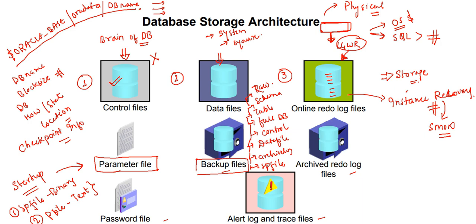Archive redo log files are among the most important files because they contain the ongoing history of data changes made by users or the application. Whenever you perform any transaction, the current transactions are captured in the archive redo log files. These are critical for recovery: if you want to recover the database, all committed transactions can be restored and recovered using archive log files. Combined with a backup, you can recover a lost data file since all data file changes are captured in archive redo log files.